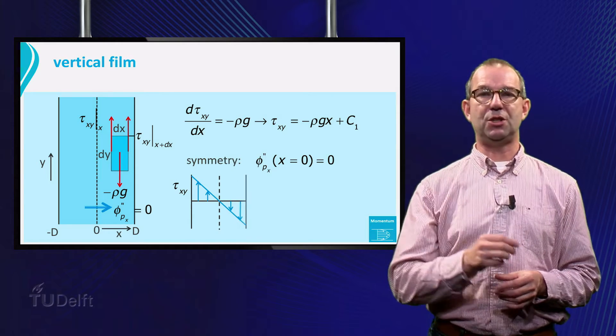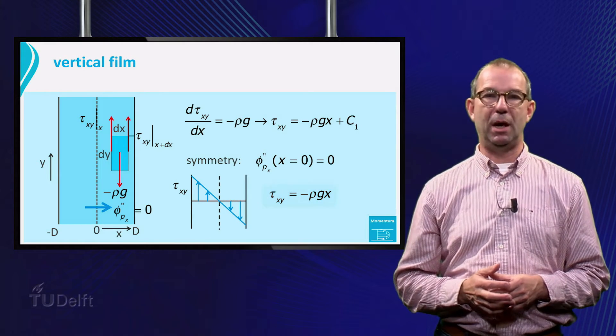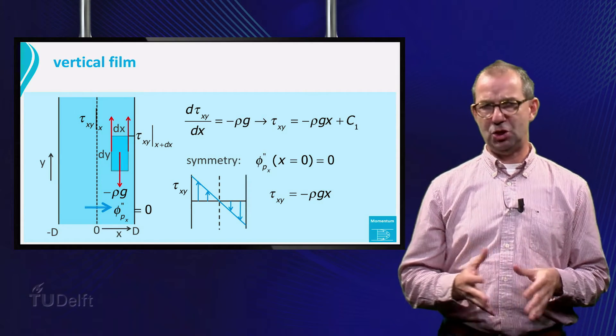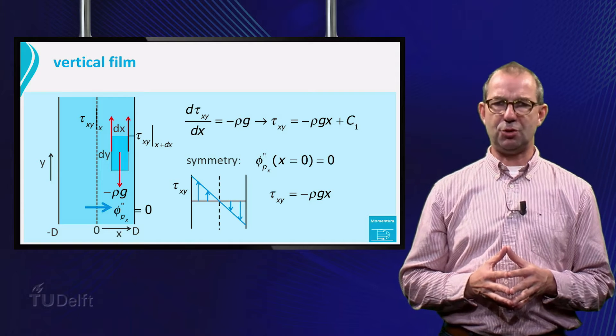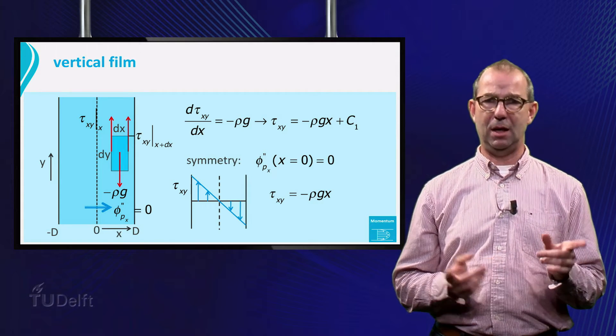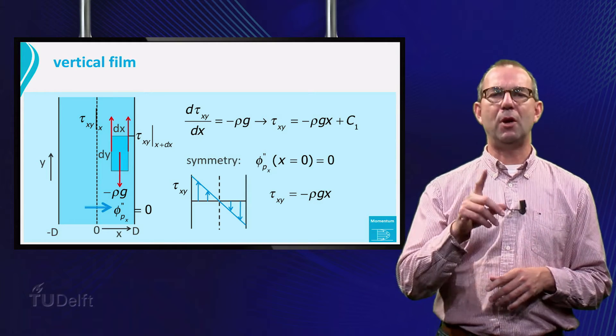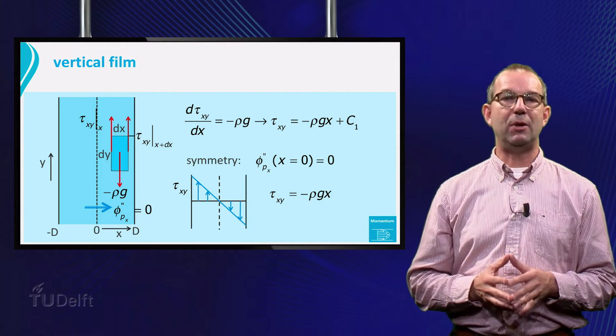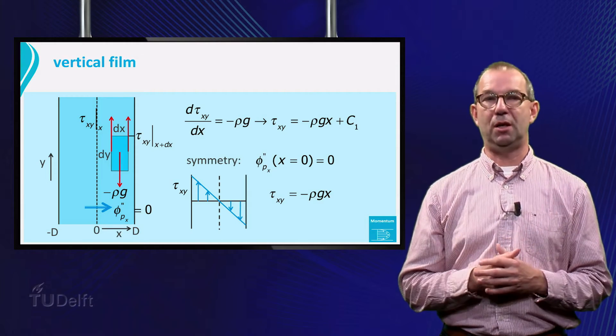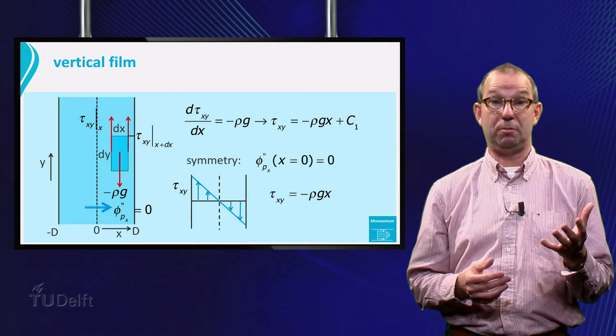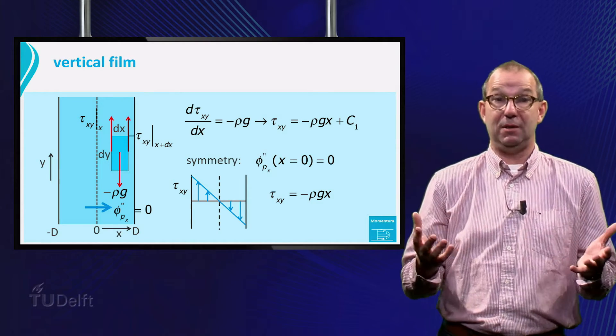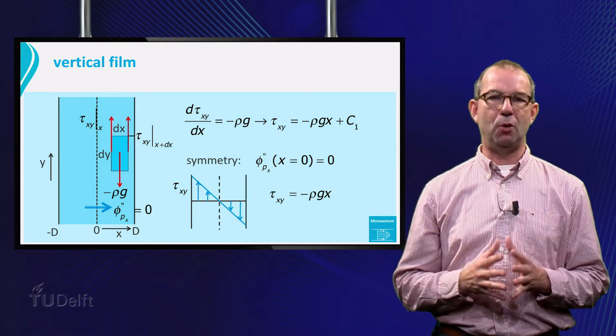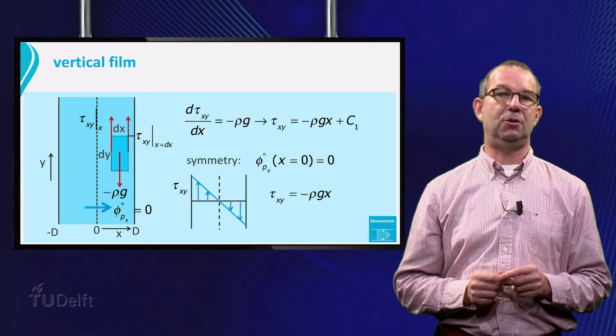And we find for the shear stress tau sub xy equals minus rho g x. Note that the mass shows that the shear stress on the left part is positive and on the right part negative. Try to figure out for yourself why this is true. Further note that we haven't used at all what kind of fluid we have. It could be air, it could be water, but equally well something like toothpaste or any other kind of strange liquid. In other words, the shear stress profile does not depend on the kind of fluid.